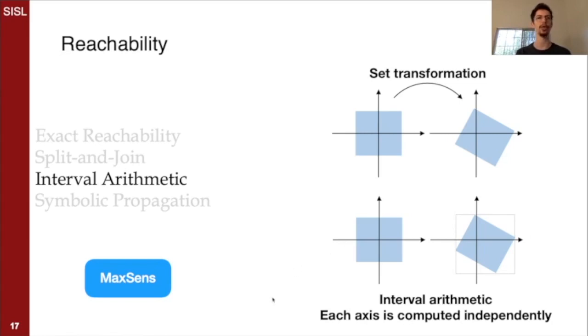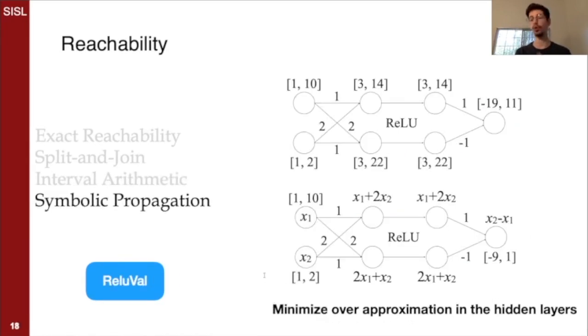Another thing we can do to try to minimize this over-approximation is we can propagate through the network a symbolic interval, a symbolic input, rather than a concrete interval with concrete values, and hope that certain cancellations take place that will minimize the over-approximation. Here we see an example, a trivial example of that. And in practice, the various algorithms use a combination of these techniques.